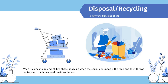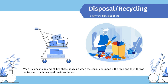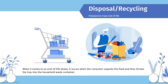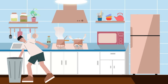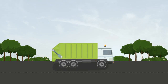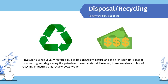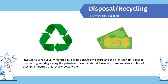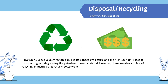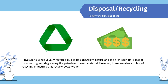Stage 4 — Polystyrene Tray End-of-Life. The end-of-life phase occurs when the consumer unpacks the food and throws the tray into the household waste container. Trays that have been used are disposed of in landfills as established by municipal waste management systems. Polystyrene is not usually recycled due to its lightweight nature and the high economic cost of transporting and degreasing petroleum-based material. However, there are still a few recycling industries that recycle polystyrene.